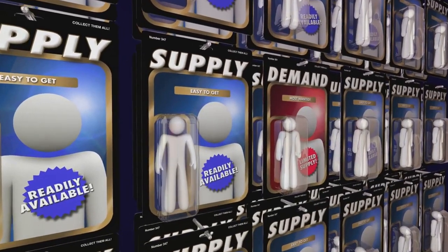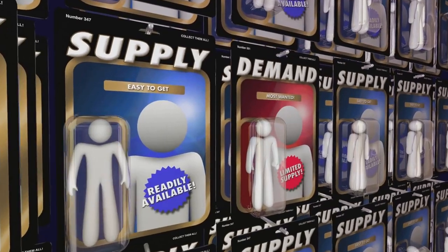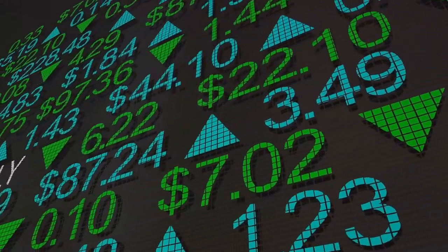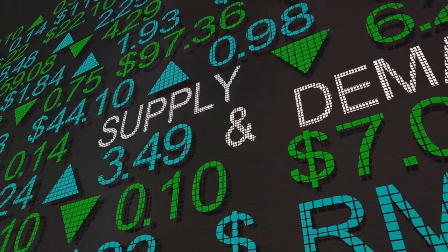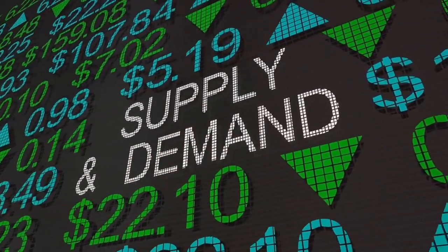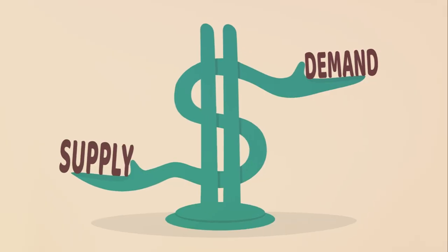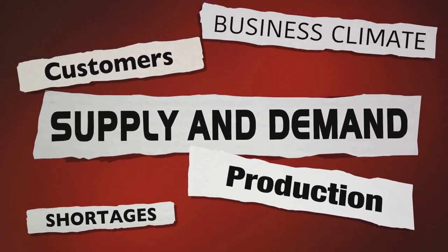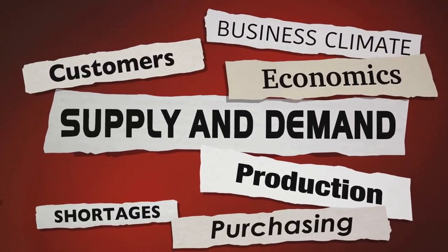One of the key concepts in microeconomics is the interaction of supply and demand. This fundamental principle helps us understand why prices fluctuate and how markets function. Imagine a bustling marketplace. Each stall represents a firm, and each customer represents an individual. The price of each item, be it a banana, a cup of coffee, or a pair of shoes, is determined by the interplay of supply and demand.